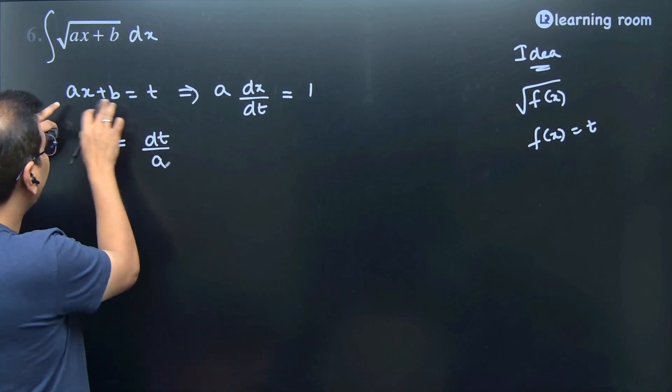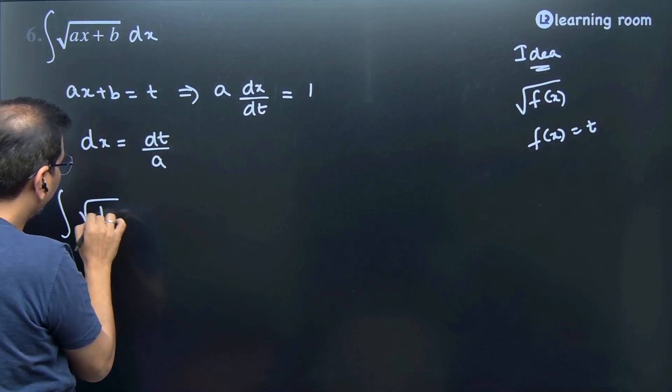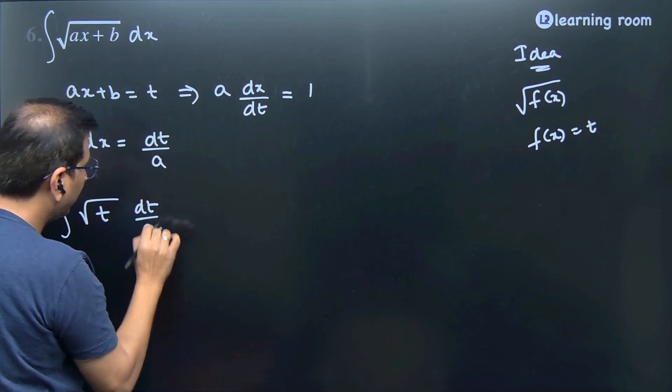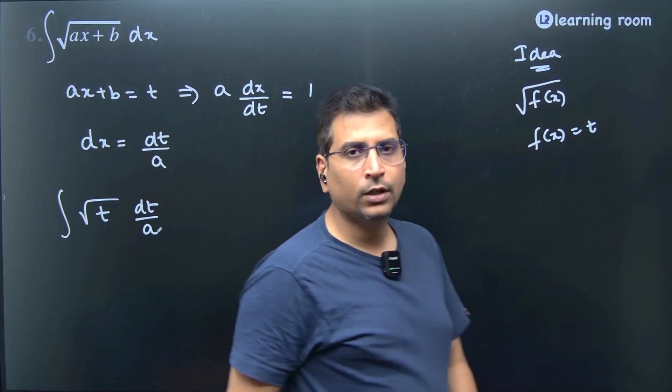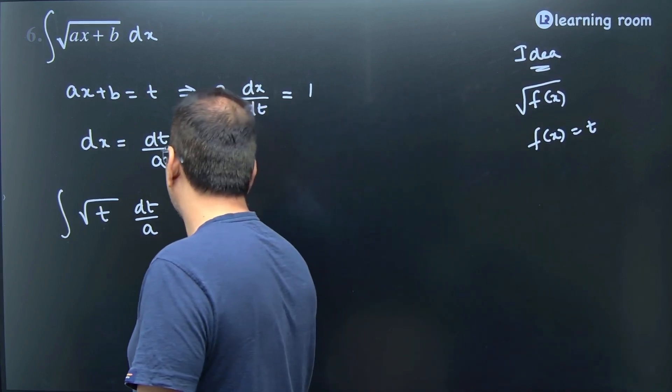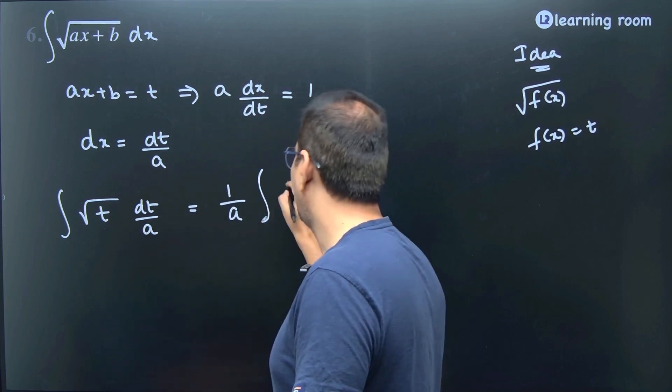Having said that, wherever ax plus b is there, I'll replace with t. So it is square root of t into the place of dx, we can write it as dt by a. So it is square root of t into dt divided by a. This is 1 by a into integral square root of t, which can be written as t power half times dt.